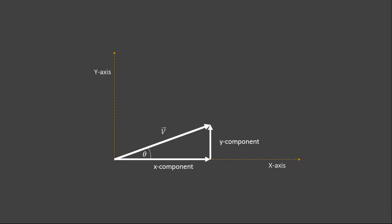This vector V is making a triangular shape with the x and y axes — triangle ABC. This is a right-angle triangle because one of the angles is equal to 90 degrees. In this triangle, vector V represents the hypotenuse, the side adjacent to theta is the base, and the side opposite to theta is the perpendicular.